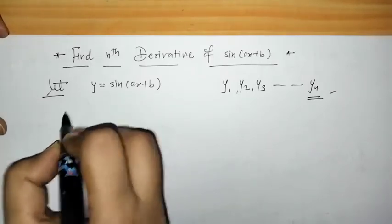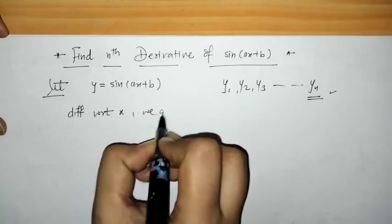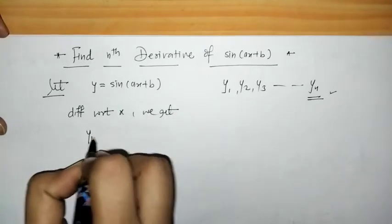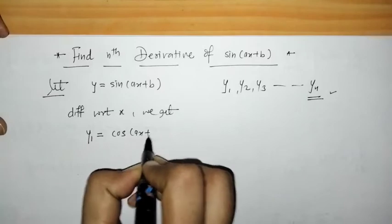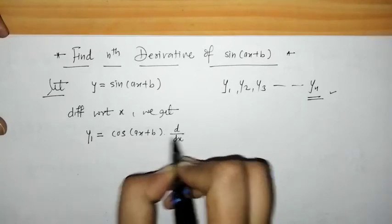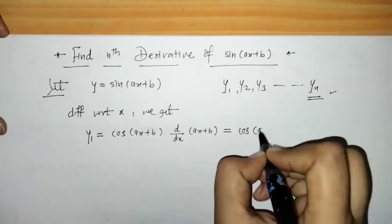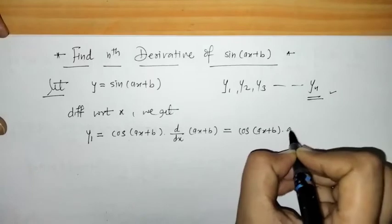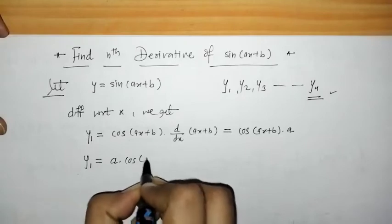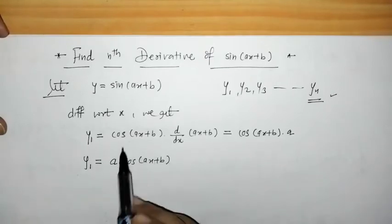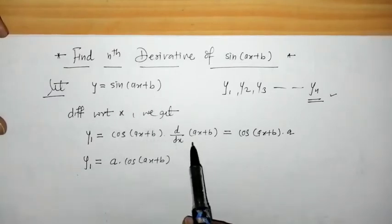Now we differentiate y with respect to x. We get y1, the first derivative: using the chain rule (function of a function), we get cos(ax + b) multiplied by the derivative of (ax + b), which is a. So the first derivative is y1 = a·cos(ax + b).